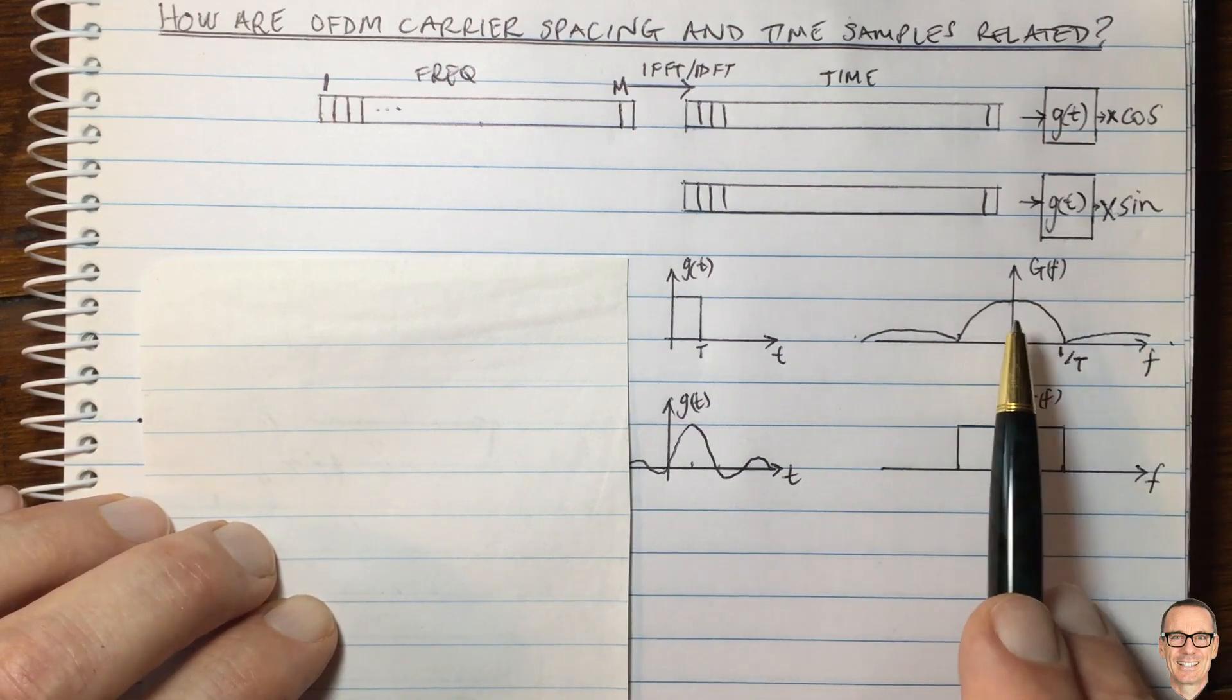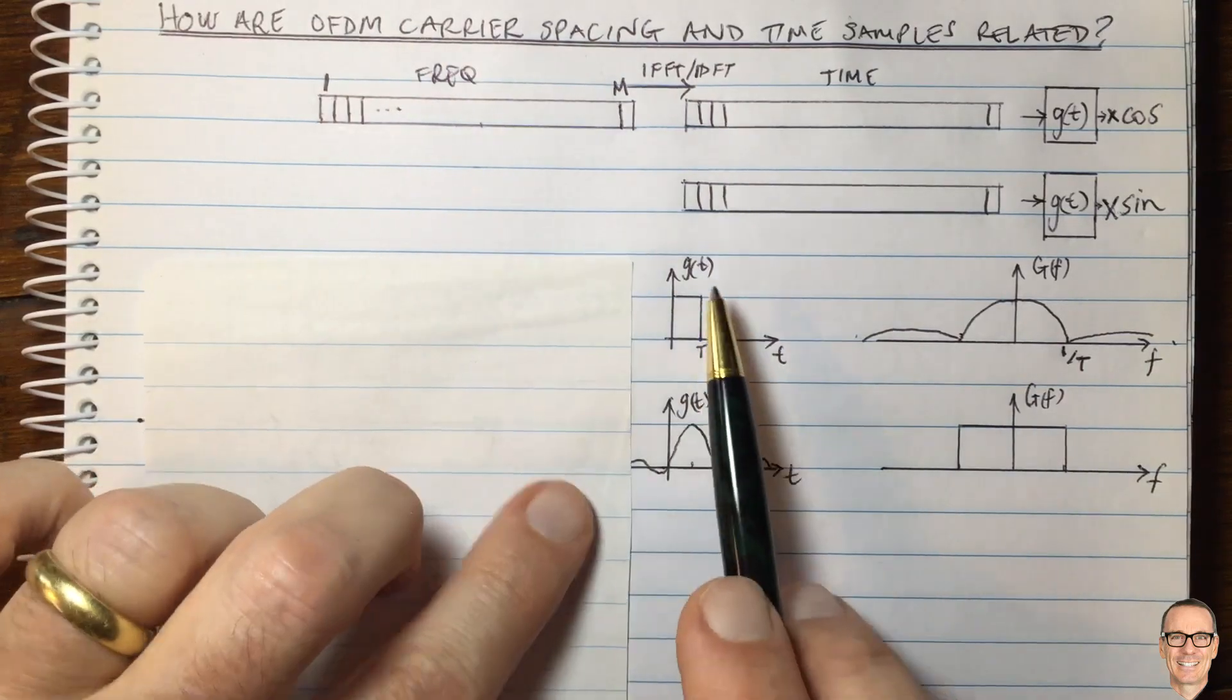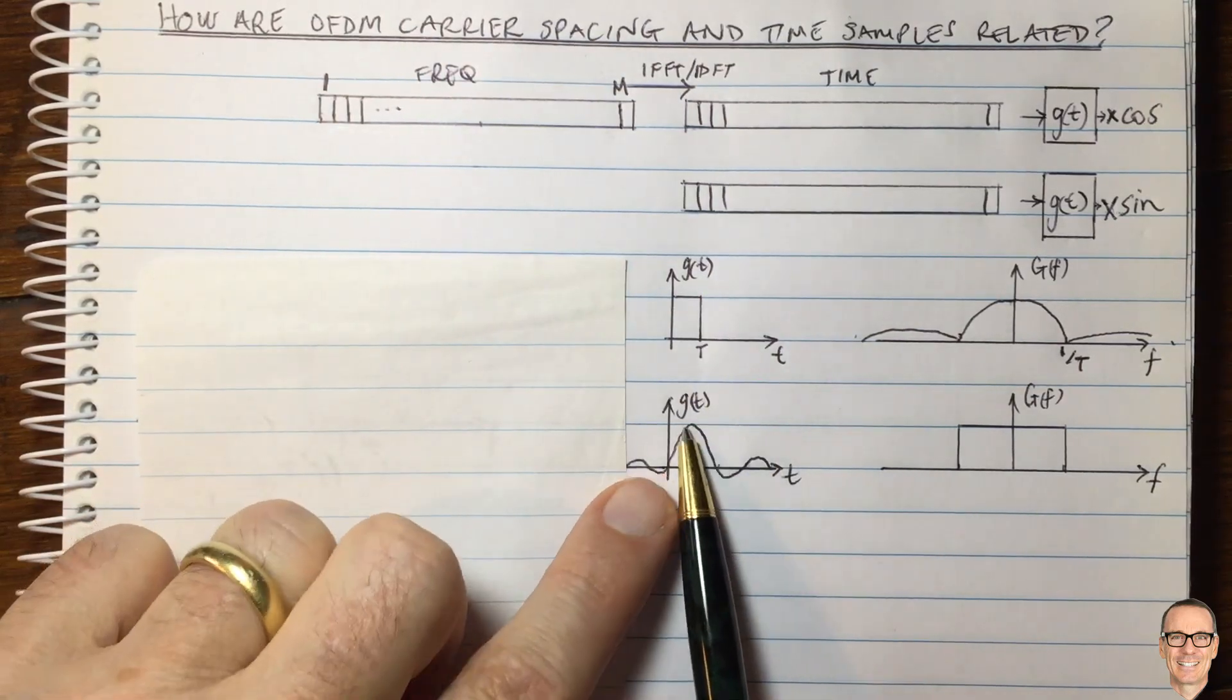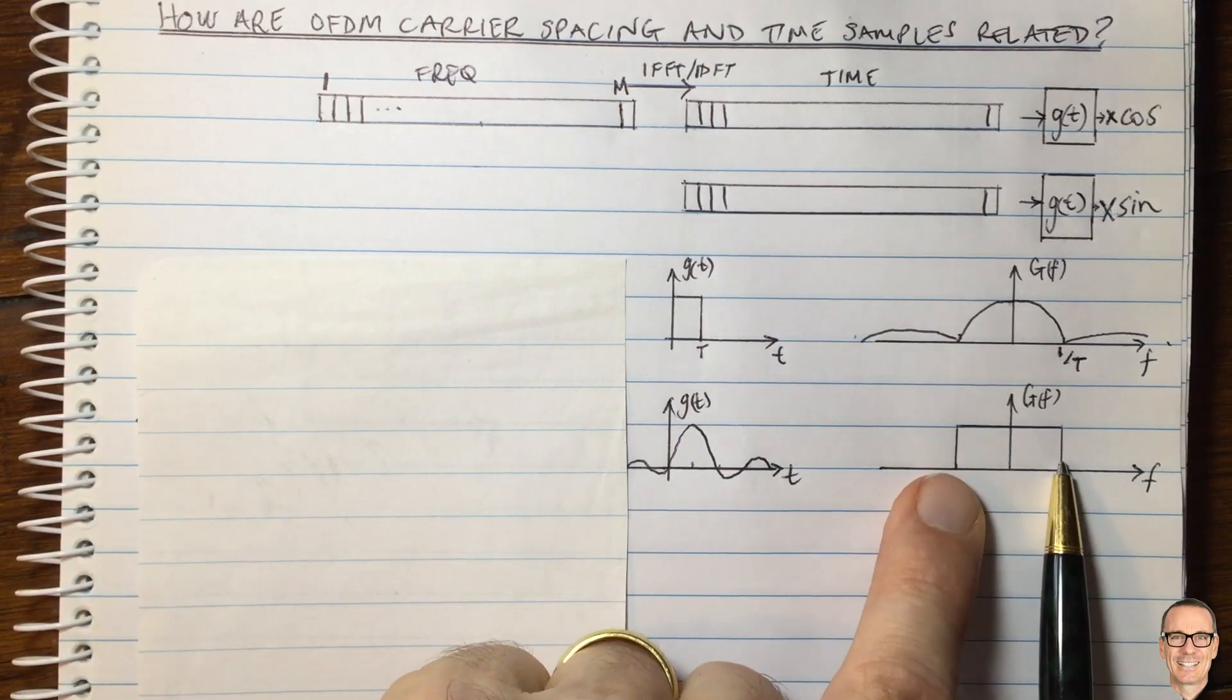We need to think of how this relates back to the OFDM subcarriers. That's what we're talking about here. Let's think of another pulse shaping filter.